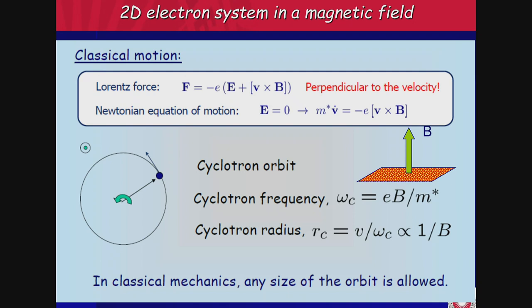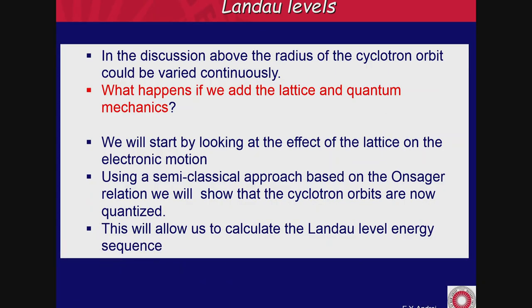In the classical case, you can have any orbit and any radius you want. When we add a lattice and quantum mechanics, we first look at the effect of the lattice on electronic motion, then use a semi-classical approximation based on the Onsager relation to show that orbits are actually quantized — you cannot have any physically arbitrary orbit. That's because the wave function has to be single-valued: when you go around, the phase has to change by a multiple of 2π. This allows us to calculate the Landau level energy sequence in a very elegant way.